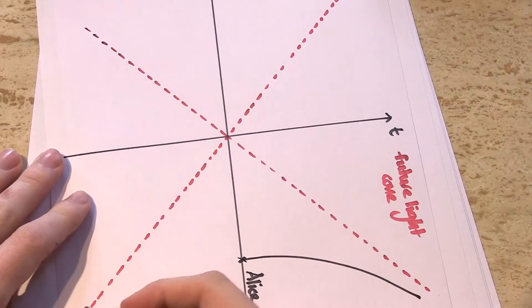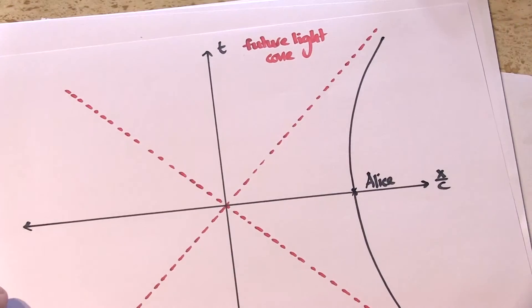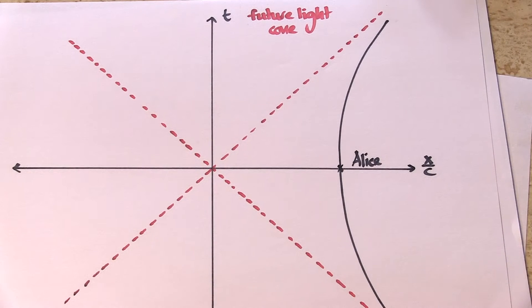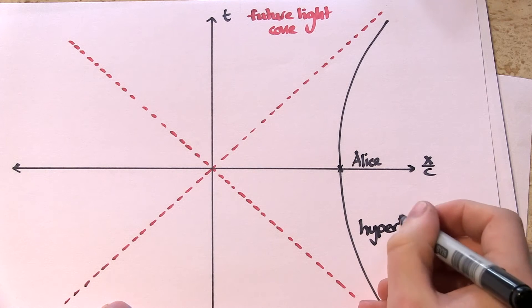If we reflect the path Alice took in the x-axis, the resultant curve is a familiar one. It's called a hyperbola. Any object that's accelerating at a constant rate traces out a hyperbola on a spacetime diagram.